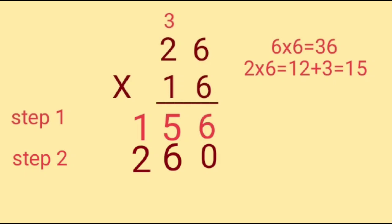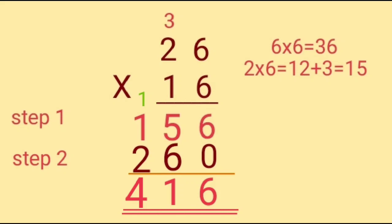Now let's move on to the third step. We have to add the first step answer and the second step answer. 6 plus 0 is 6. 5 plus 6 is 11, so we write 1 in the tens place and carry over 1 to the hundreds place. Then add 1 and 2 to get 3, plus the carried over 1 gives 4. So the answer is 416. Therefore, the teacher has 416 books with her.